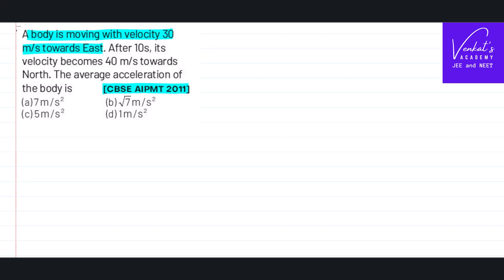On a paper, if you take a two-dimensional motion, this is the origin, positive x-axis, negative x-axis, positive y-axis, negative y-axis. On the paper, you can consider positive x-axis as East, negative x-axis as West.